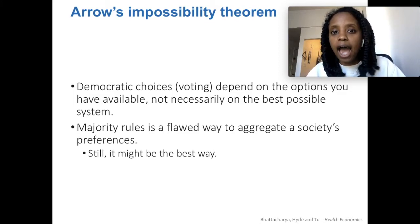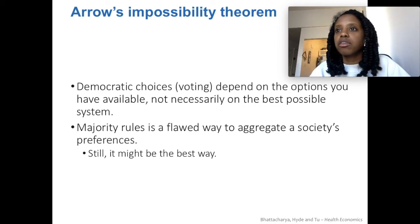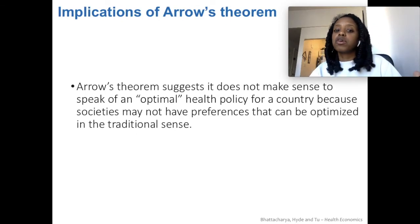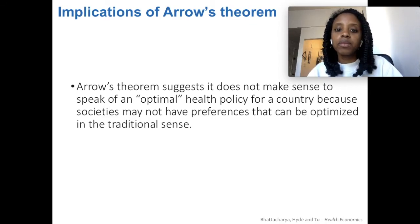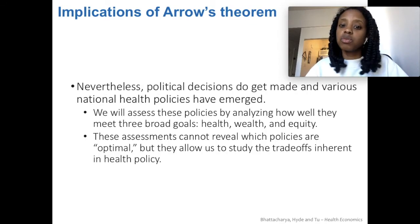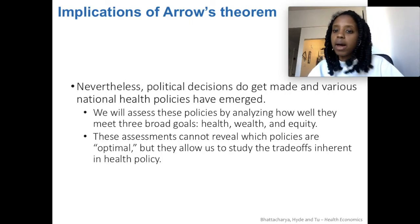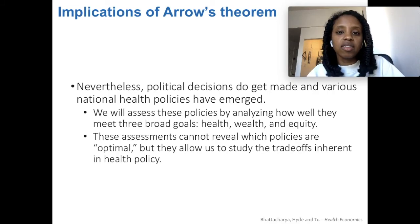It might be the best way that we have — democracy is, we just don't really have something better than that. But it is going to be flawed, and so it's really difficult to define the first best for optimal health policy for a particular country. Regardless, within that framework, we do end up having policy decisions that come out of this political process, and we can assess these policies in terms of which one is better.